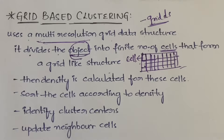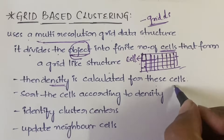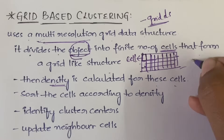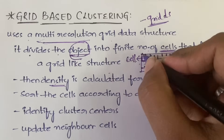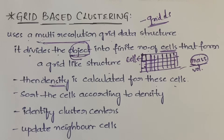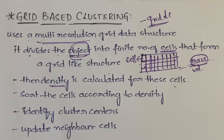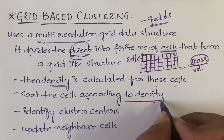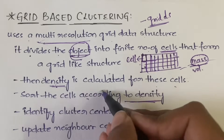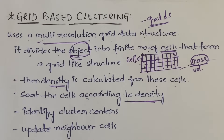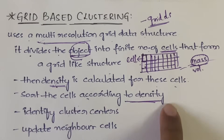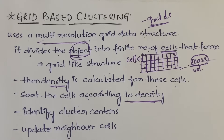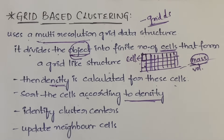After dividing the data into cells, you calculate the density for each cell — density is mass divided by volume, meaning how much of the data object is inside the cell relative to its volume. Next, you sort the cells according to their density. Then you identify the cluster centers, because in order to make a cluster you need a center or centroid, and based on that center you will be grouping the data.